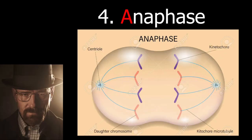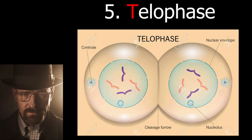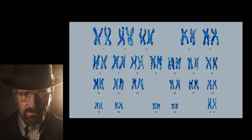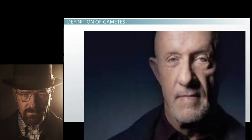Then, in anaphase, the centromeres divide. The split chromosomes are identical to each other. They are then dragged to the opposite poles of the cell by the spindle fibers. Finally, in telophase, the chromosomes lengthen again, and the spindle fibers dissolve. The nuclear membrane reforms around the two sets of chromosomes. In humans, we each have 46 unique chromosomes in every cell of our body, aside from the gametes, with only—